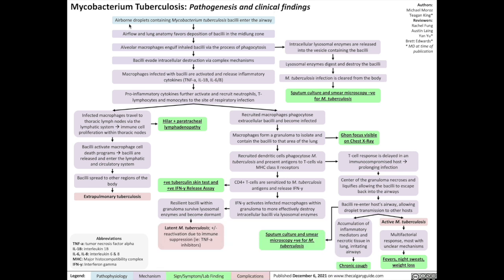First of all, the pathogenesis of tuberculosis starts with airborne droplets that contain Mycobacterium tuberculosis bacilli, which enter the airway as they're breathed in. The way air flows into the lungs and the way lung anatomy works favors the deposition of the bacilli into the mid-lung zone. The immune system recognizes these foreign bacilli, and alveolar macrophages engulf inhaled bacilli via phagocytosis.